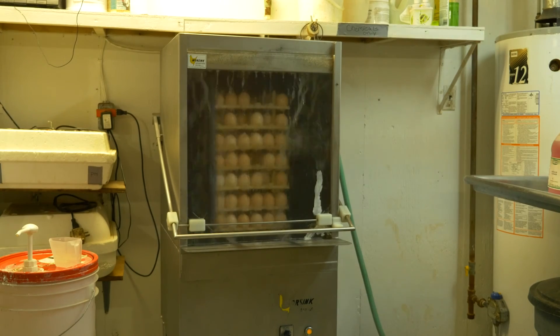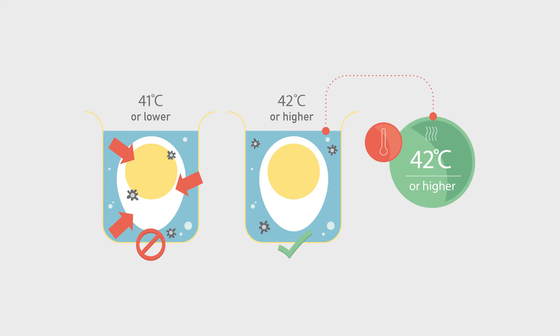However, getting eggs wet, for example during washing, removes the protection of the cuticle. If the egg is placed in water cooler than 41 degrees Celsius, it can draw in the bacteria-laden water.